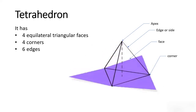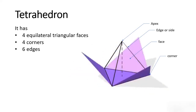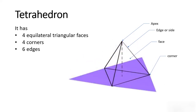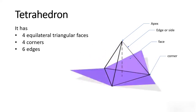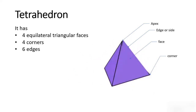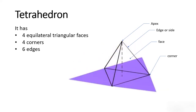Similarly, we have a face. In the case of pyramids, we call them lateral faces or just faces. This is the corner, and these are the base edges.